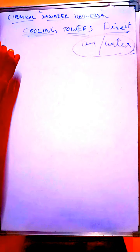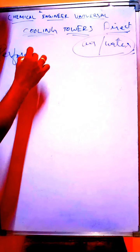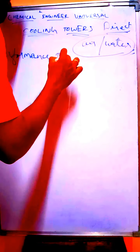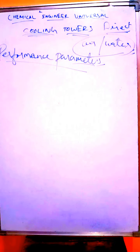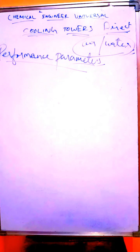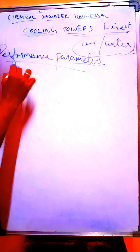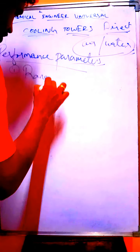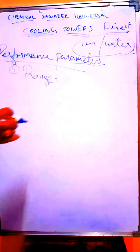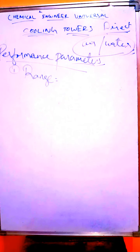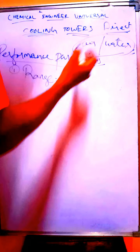Now we go to the performance parameters. These parameters decide the performance of the cooling tower. These parameters are periodically measured and noted down to find out the performance of the cooling tower. The first one we need to find is the range.